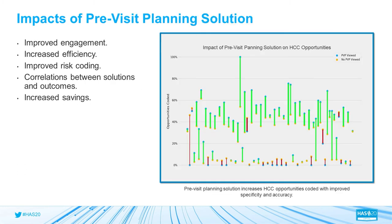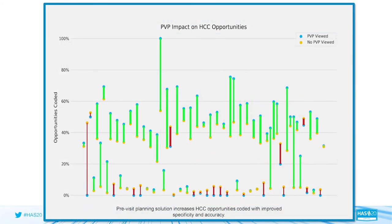Why does it matter? We've started looking at some of the impacts here: improving engagement, efficiency, risk coding, correlations between solutions and outcomes, and increased savings. This chart shows that when providers are using the Pre-visit Planning Tool, they are able to consistently identify and code more effectively for HCC opportunities that a patient presents. The tool presents opportunities from clinical indicators suggesting a patient may be relevant for a specific HCC group. It is the provider's clinical judgment how to code it, and the answer is pretty consistently yes — they are getting in and making those decisions.